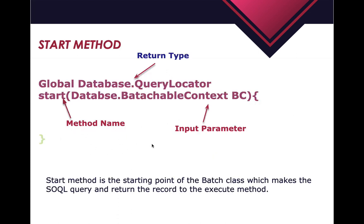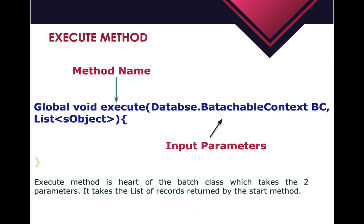The start method is the starting point of our Batch Apex. From that method the Batch Apex class starts, it takes a query, executes that query, and returns the records to the execute method. The execute method is the actual heart of our Batch Apex where we put all the logic or call some handler class to process the logic for multiple records. It takes two parameters: batchableContext and the scope that gets the records from the start method.